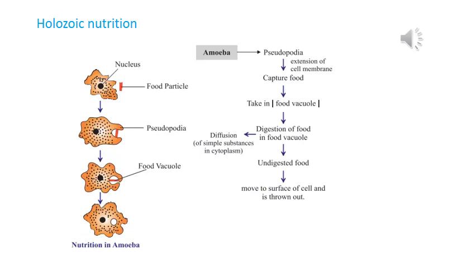Once the food material is internalized inside amoeba's body, it undergoes digestion with different lytic enzymes acting on it. Once digested, the unwanted waste food material needs to be removed immediately as it could cause toxicity. Amoeba uses the same cellular membrane structure — pseudopodia — to expel the excretory material.